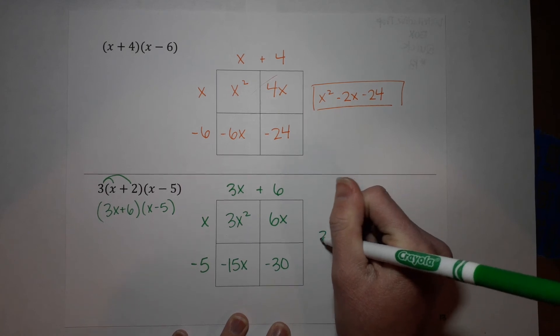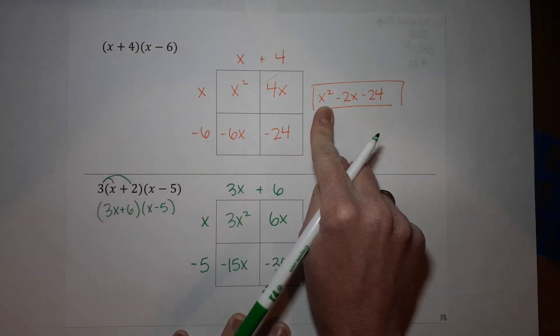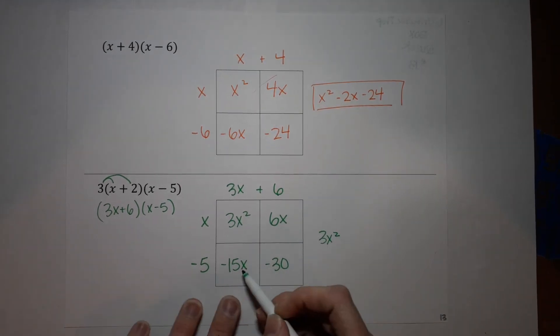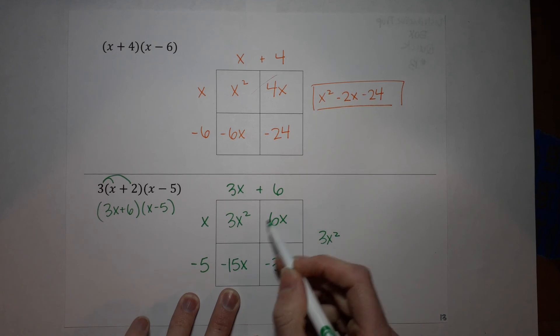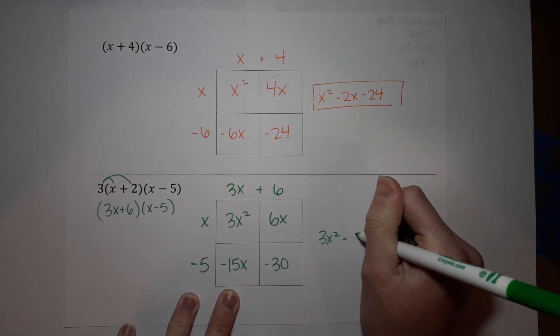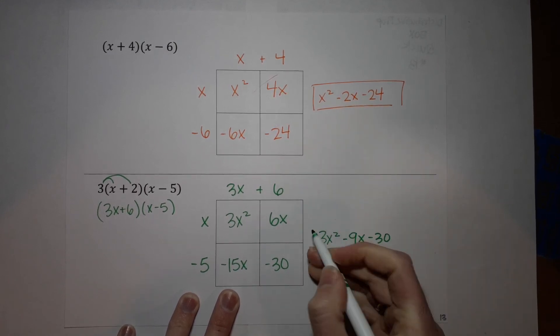All right, we're almost done. Three x squared. We always like to write these in descending order, so highest exponent on down. So I've got the three x squared. I can combine these like terms. So six x minus 15 x gives me negative nine x, and then I've got the minus 30 on the back, and you are done.